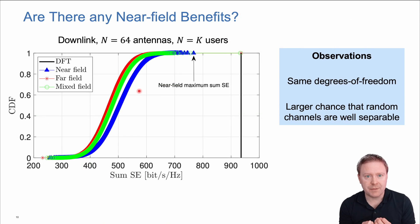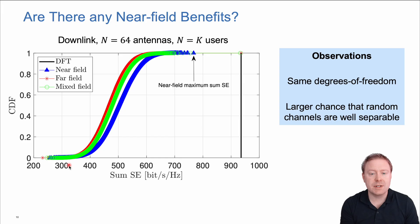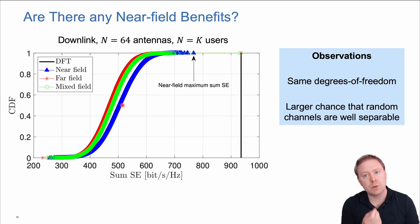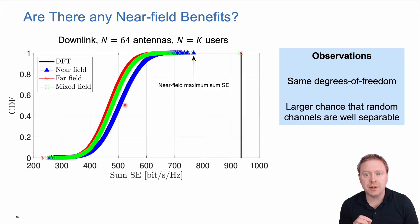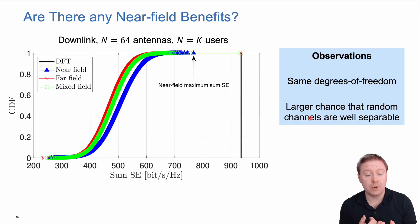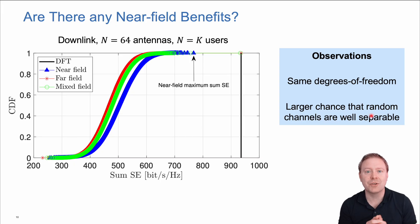Looking more closely at the benefits with the same number of antennas as users, we show the upper bound and CDFs of performance across different random user drops. The CDF curve is shifted to the right—towards larger values—when users are dropped only in the near field. We have the same number of spatial degrees of freedom equal to N, the number of antennas, which is the maximum number of users we can serve and the size of our vector space. But with near-field users, because channels depend on both angle and distance, there is a larger probability that randomly placed channels are well-separable, providing a clear benefit of near-field communications.